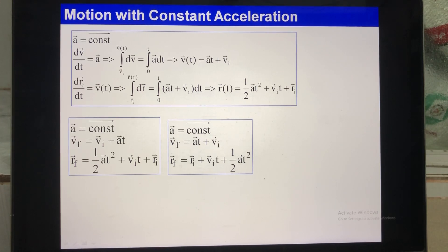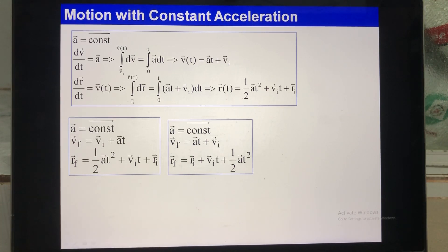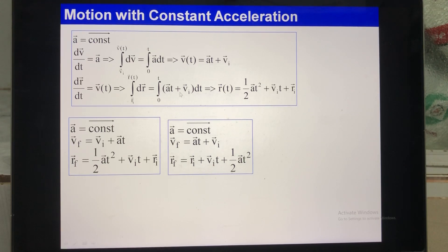When you have velocity, you can find the expression for the position vector. To calculate velocity, you take the derivative of the position vector with respect to time. Move dt to this side and do the integration the same way. Do not move Vt outside the integration sign because Vt depends on time. Perform the integration to get the position vector.